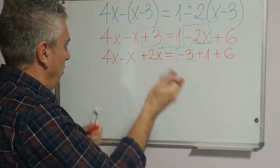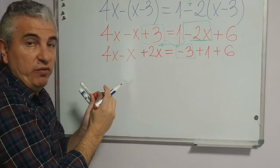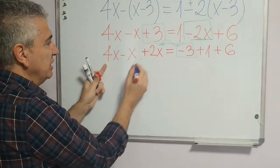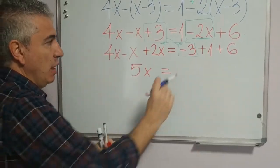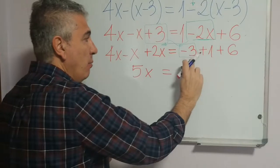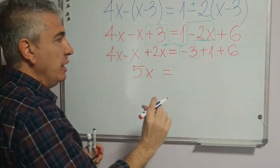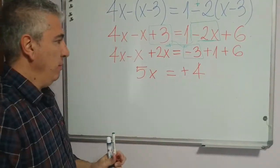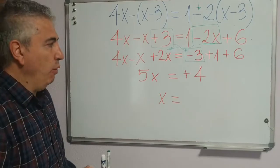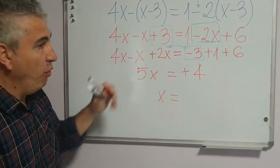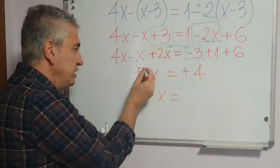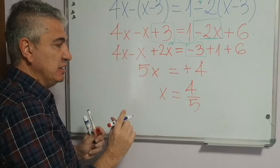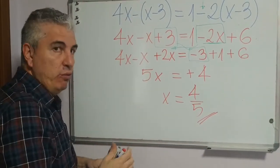Now let's operate the left side: 4x plus 2x minus x equals 5x. On the right side: 6 plus 1 is 7, minus 3 gives 4. So 5x equals 4. Now we divide both sides by 5 — the coefficient of x. We get x equals 4 divided by 5. This is the solution of the equation.